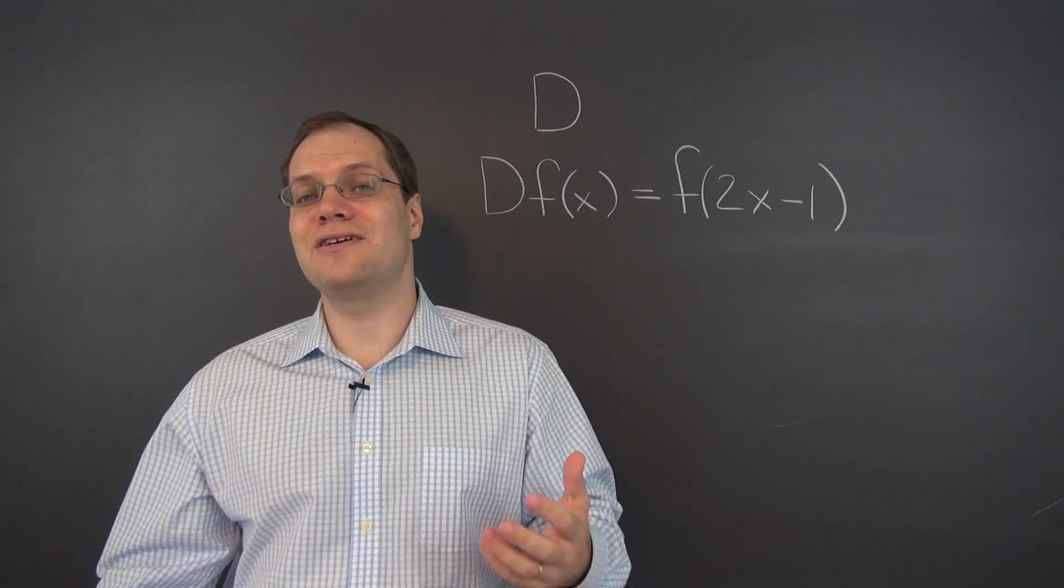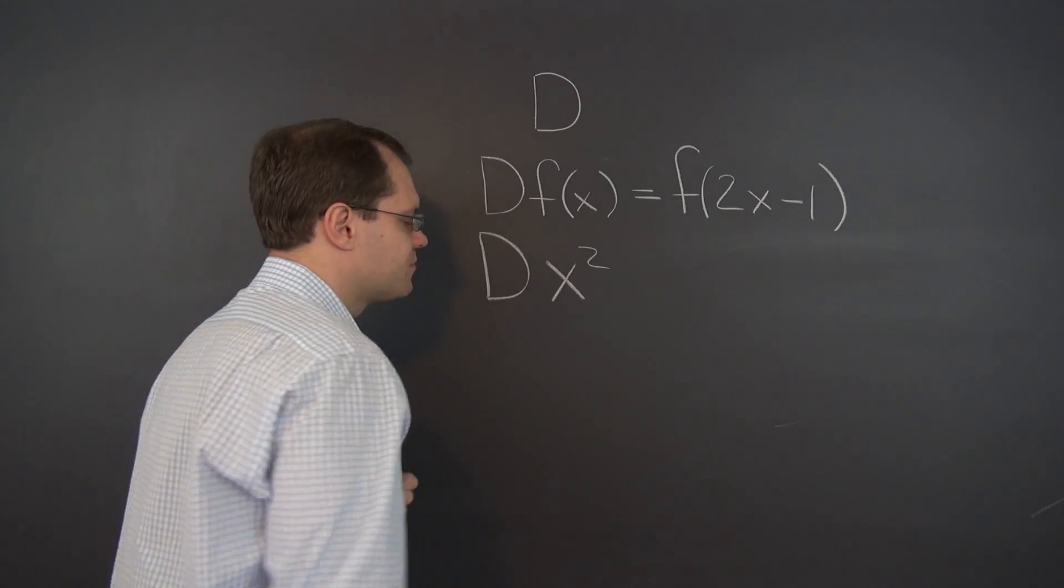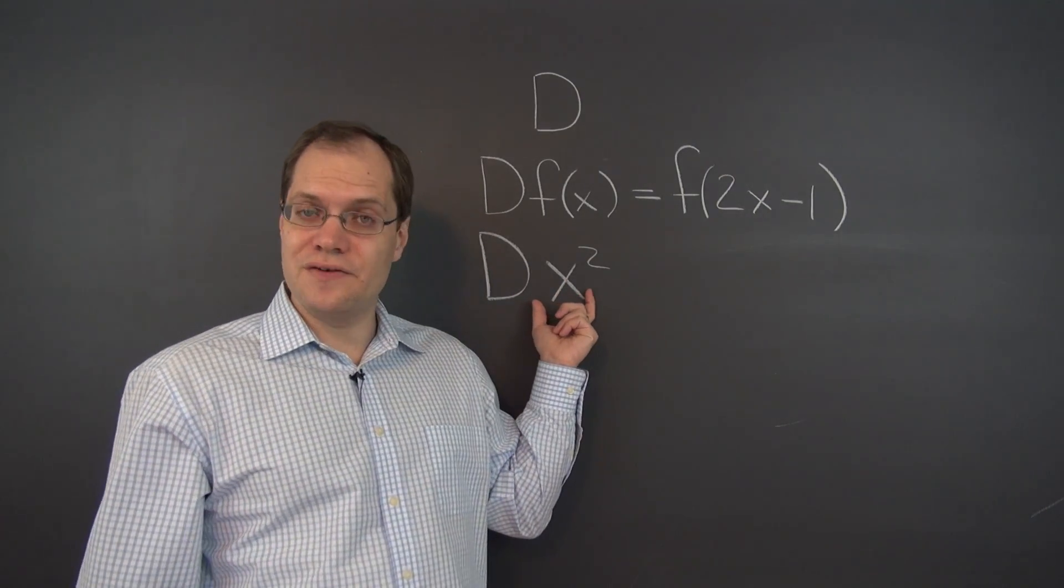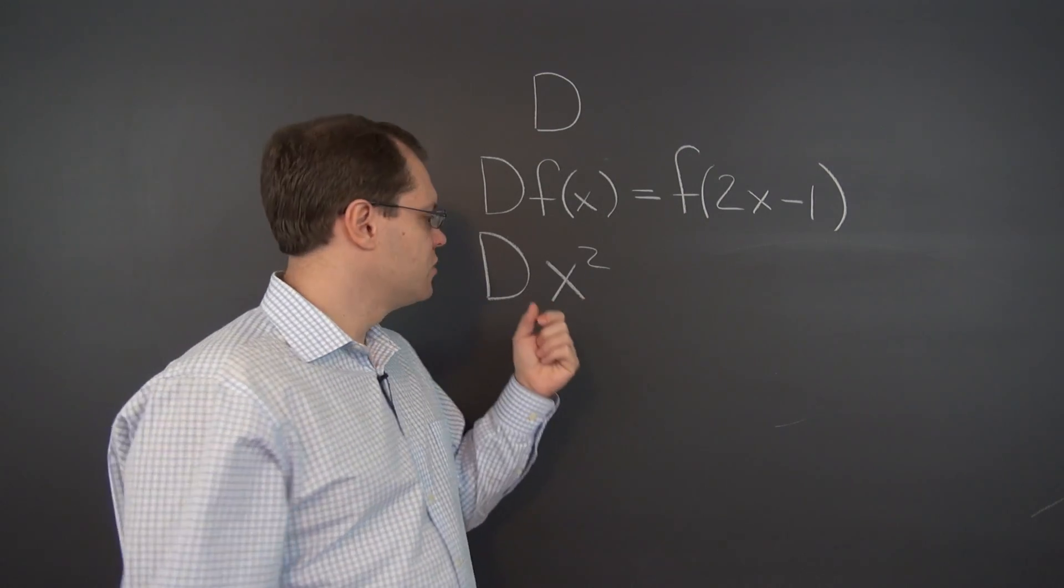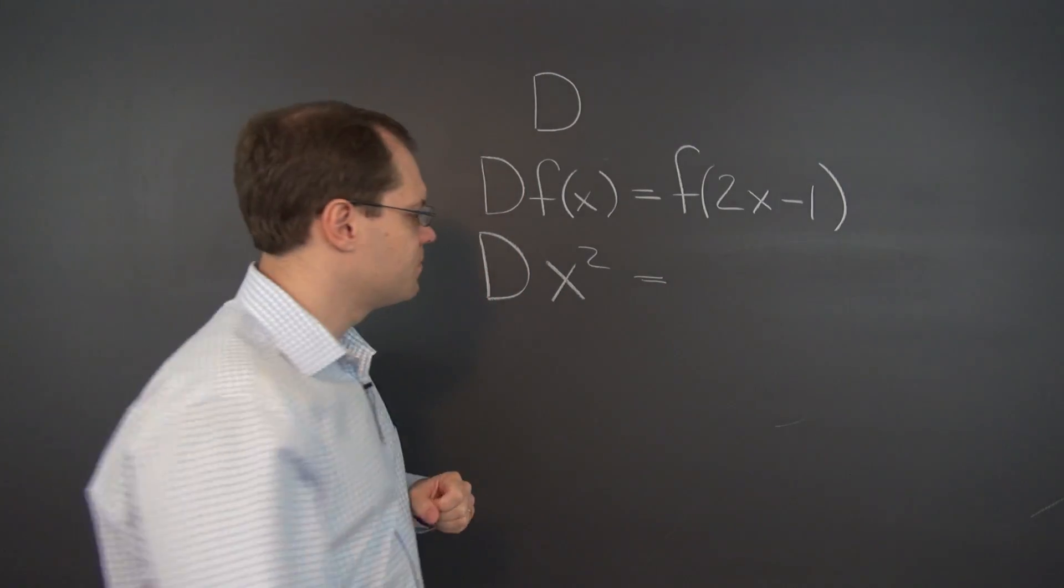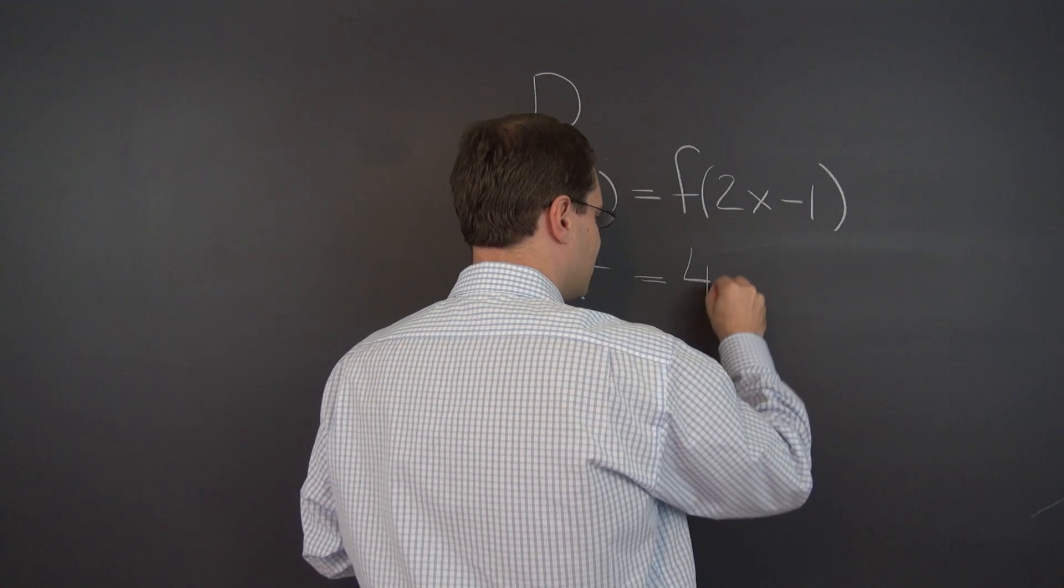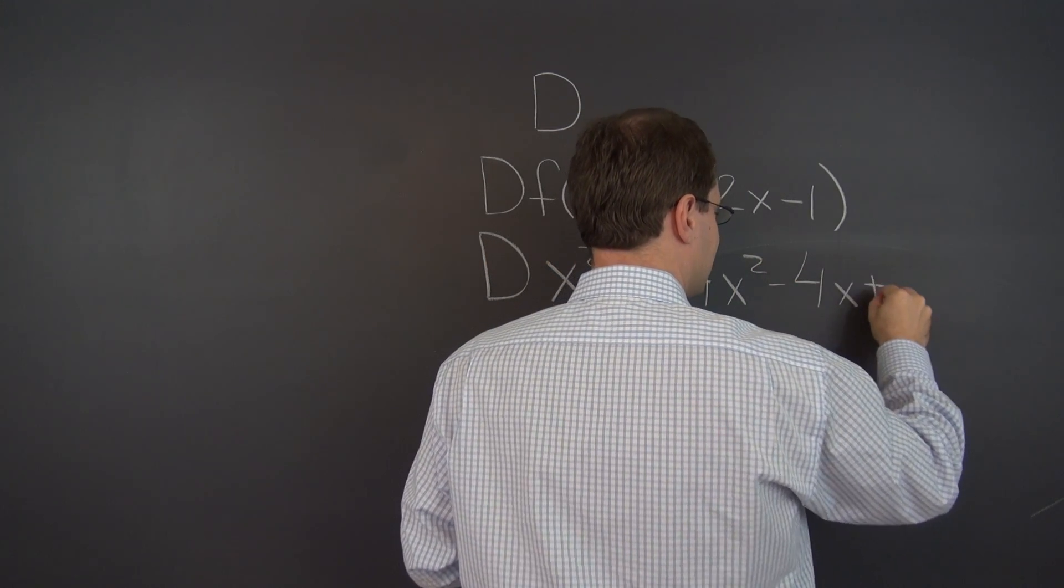So let's just look at a few examples. For example, D of x squared. So what you need to do is, wherever you see x, plug in 2x-1. So this becomes 2x-1 quantity squared. In other words, it's 4x² - 4x + 1.